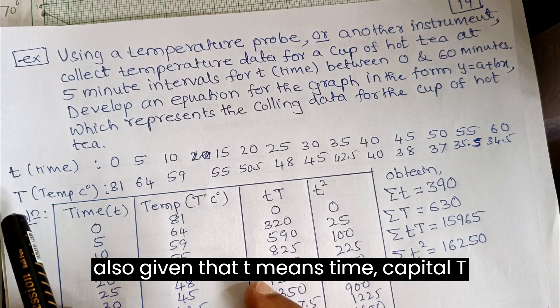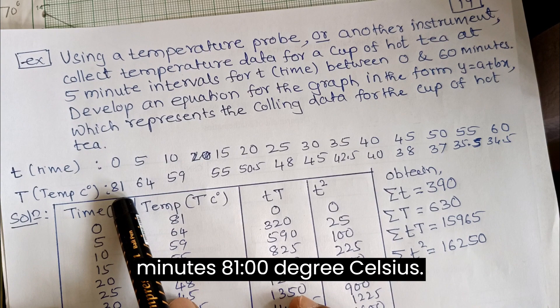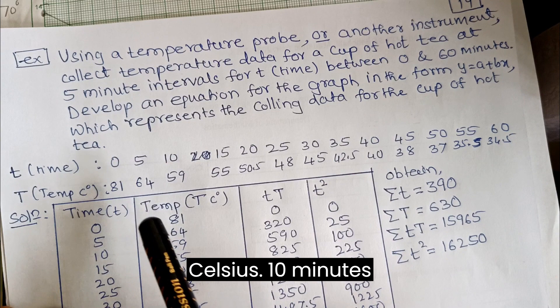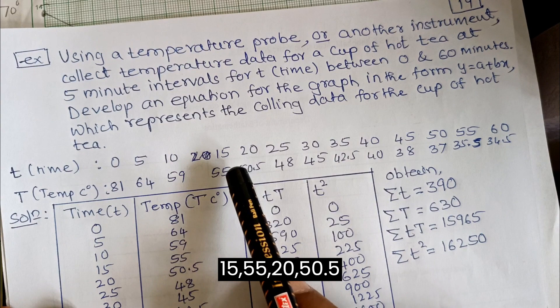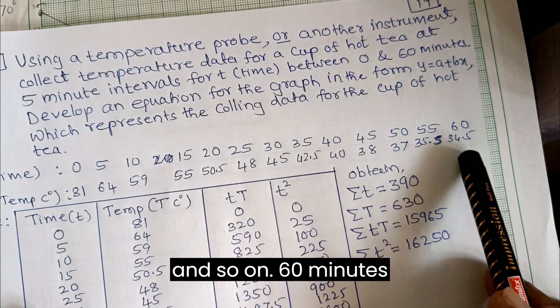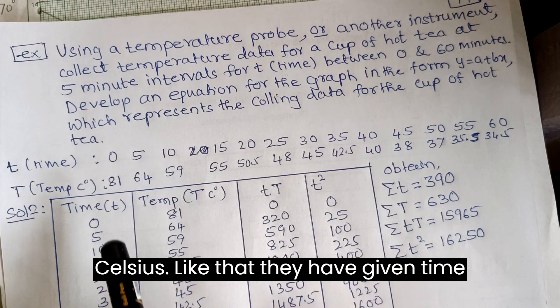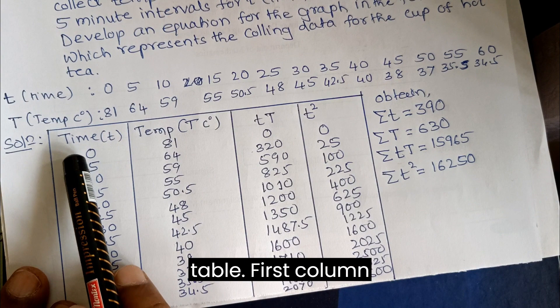It is given that t means time, capital T means temperature. 0 minutes: 81 degrees Celsius, 5 minutes: 64 degrees Celsius, 10 minutes: 59 degrees Celsius, and so on. 15: 55, 20: 50.5, up to 60 minutes: 34.5 degrees Celsius. They have given time and temperature. We can prepare the table.